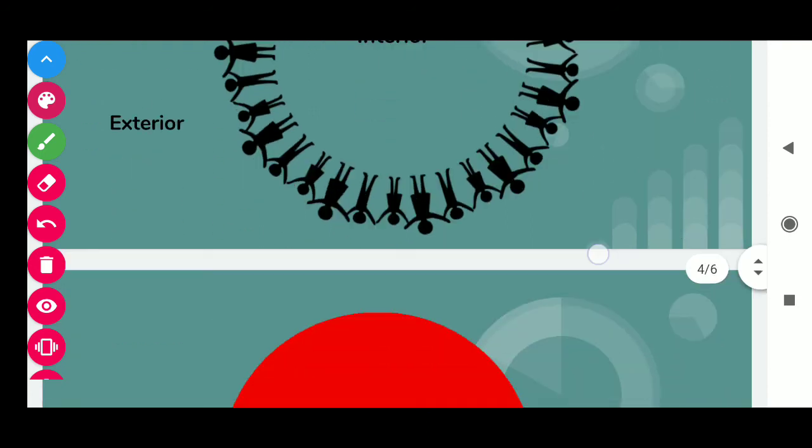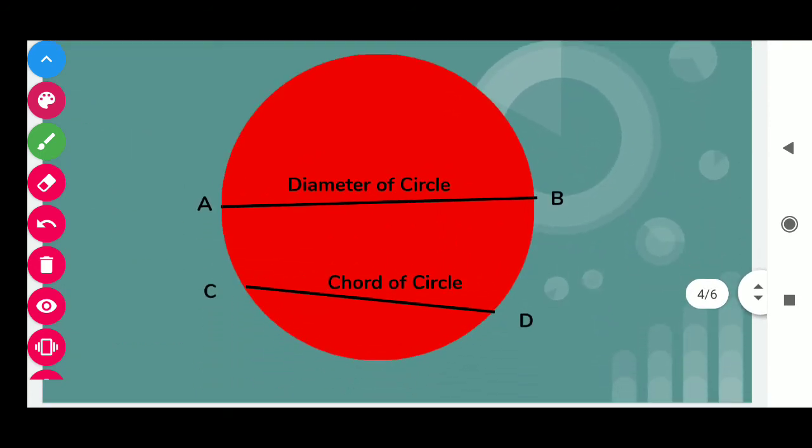Next, we have the diameter of the circle. What do you mean by diameter? If we join any two points on the boundary of the circle and that line must pass through the center, then that line is called the diameter of the circle.